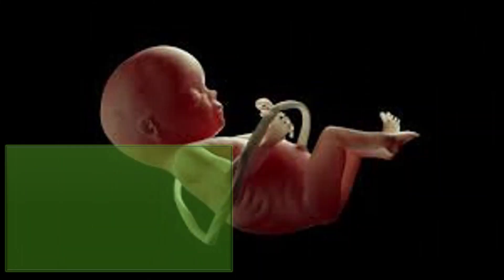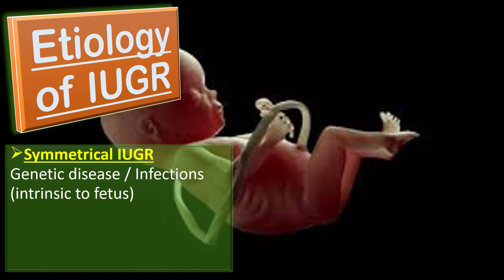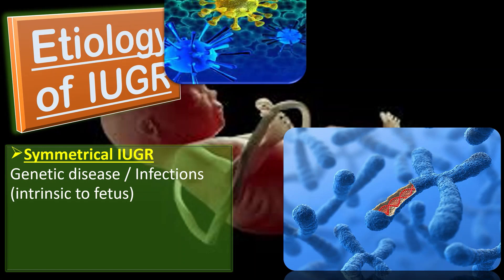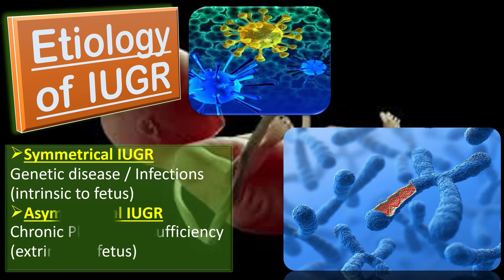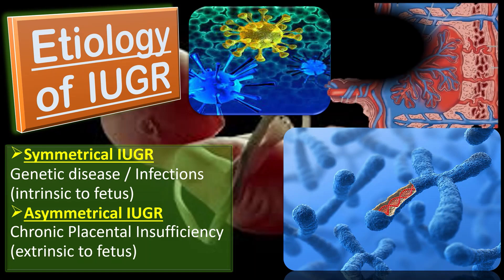Coming to the etiology of IUGR, in symmetrical IUGR, the factors which are intrinsic to the fetus are responsible, like genetic diseases and infections. Whereas in asymmetrical IUGR, the extrinsic factors are responsible, like chronic placental insufficiency.